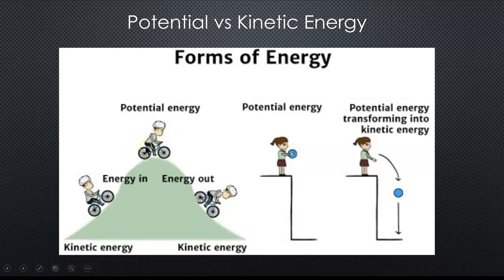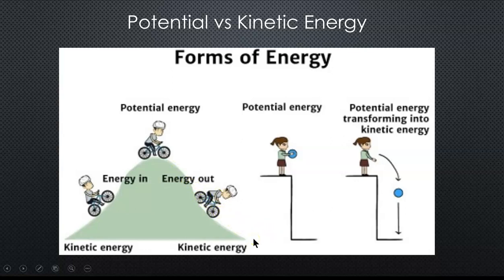Because once they get to the top and they're hanging out there, their potential energy — the energy that they have saved up to use — is more than it was down at the bottom. They're gaining potential energy as they're going up the hill. Then, as they're moving down the hill, we have kinetic energy. So potential energy is energy that is stored or saved, and kinetic energy is energy in motion.